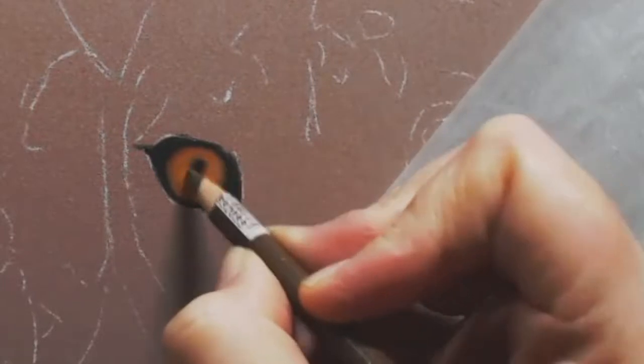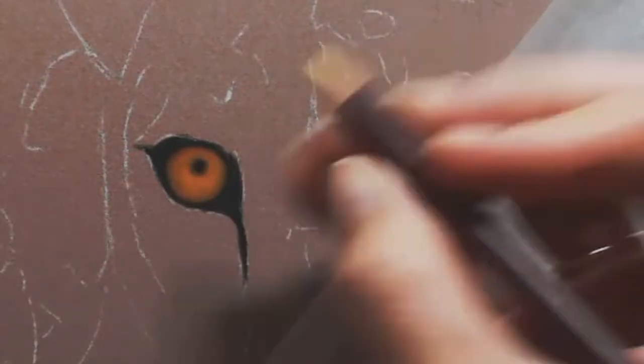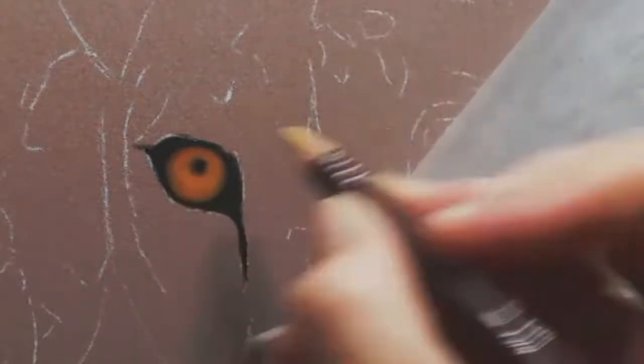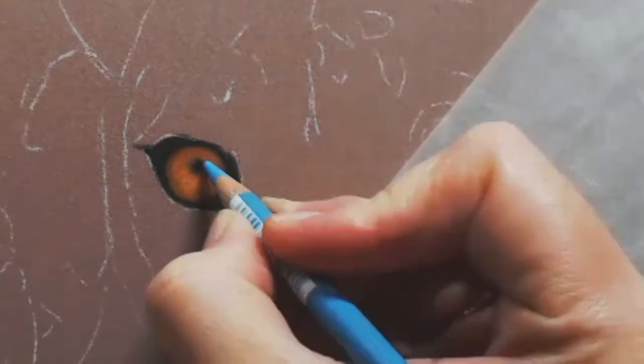Adding some more darks. Just paying really close attention to where these colors are on your reference photo. So, this is a Derwent Pastel pencil here, that I'm using to add some highlights. This is all a layering process. Each layer you add is slightly lighter than the layer before. And the Derwent Pastel pencils, because they are soft, they overlap really well.